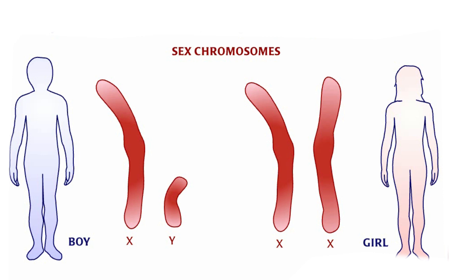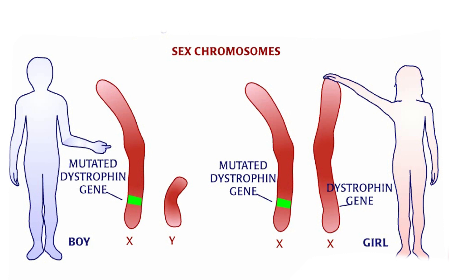If one is mutated, she can fall back on the other gene. A boy has only one X and only one dystrophin gene. If he gets a mutated dystrophin gene, he has no other copy to fall back on.